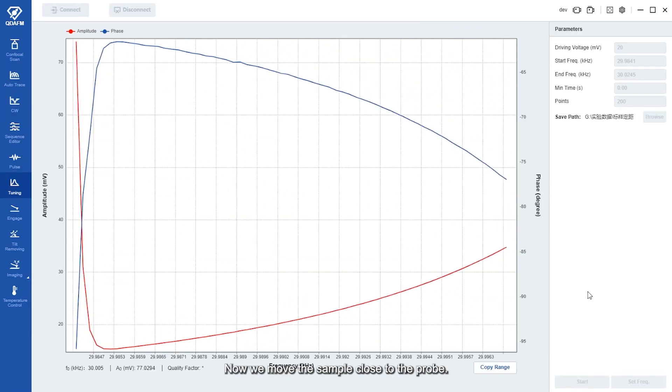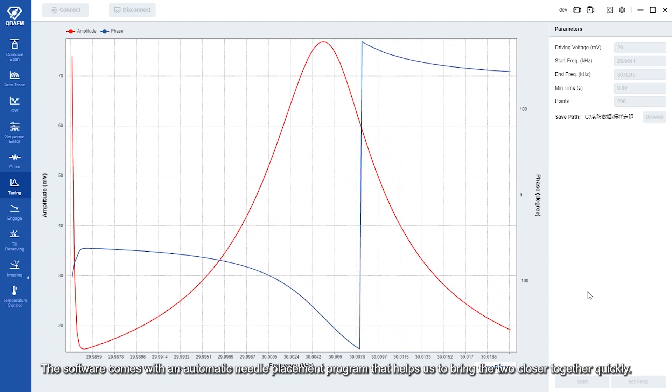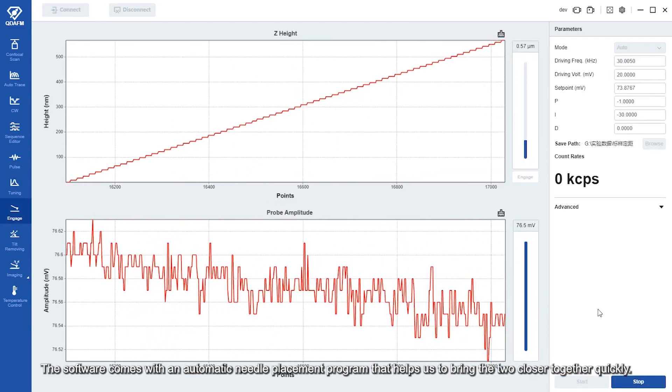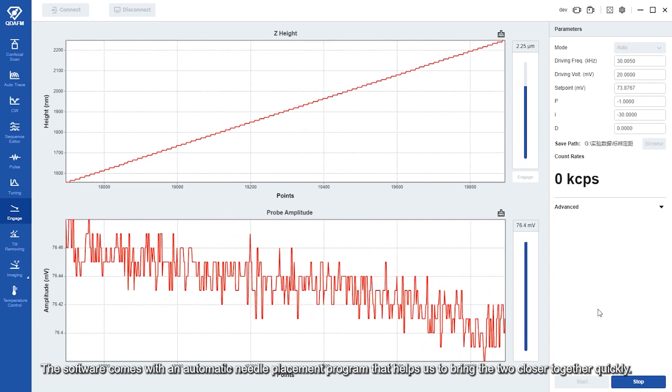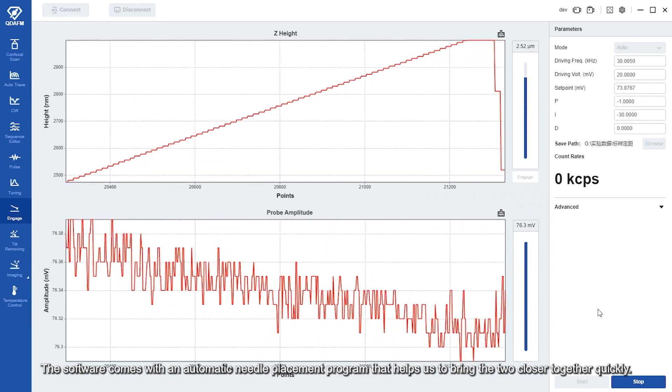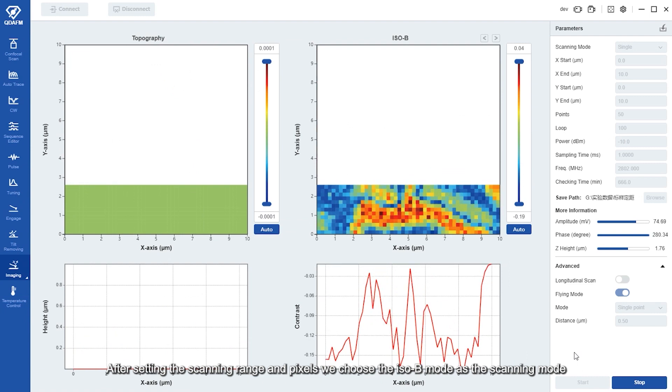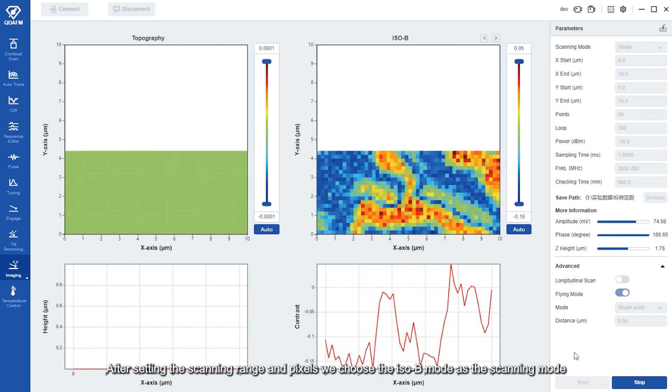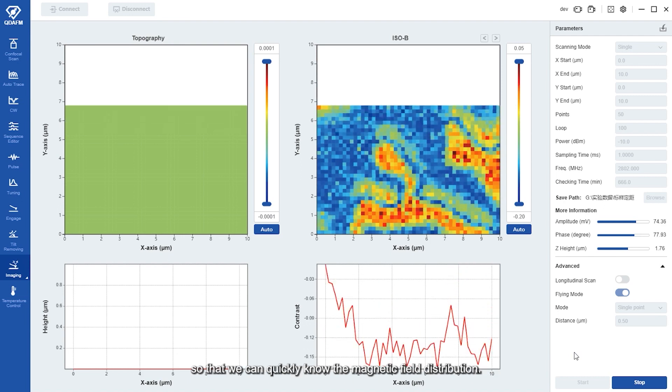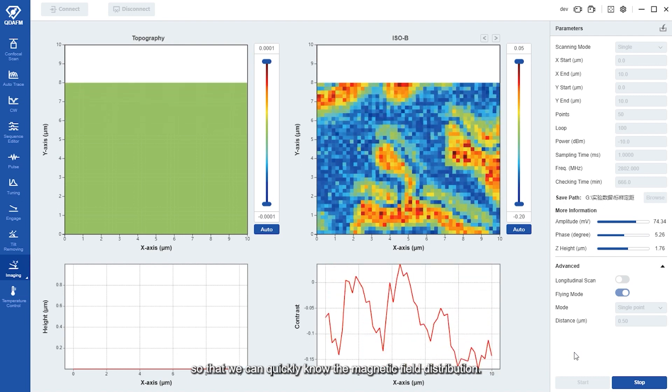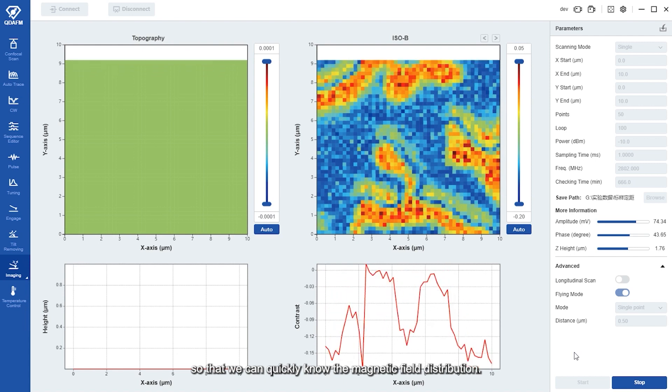Now we move the sample close to the probe. The software comes with an automatic needle placement program that helps us to bring the two closer together quickly. After setting the scanning range and pixels, we choose the ISO-B model as the scanning model so that we can quickly know the magnetic field distribution.